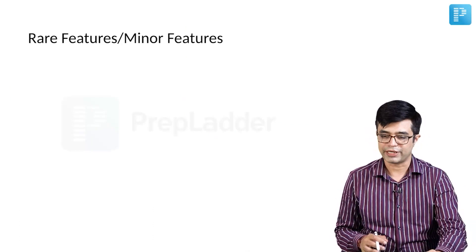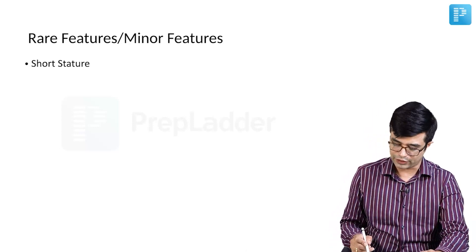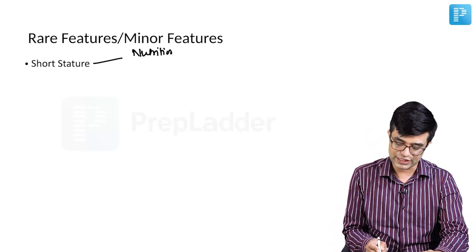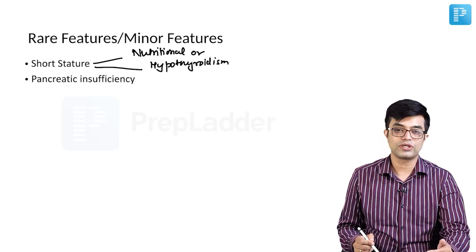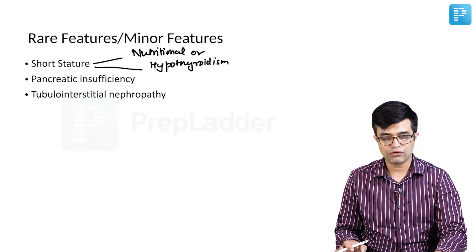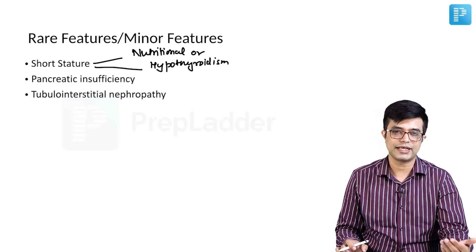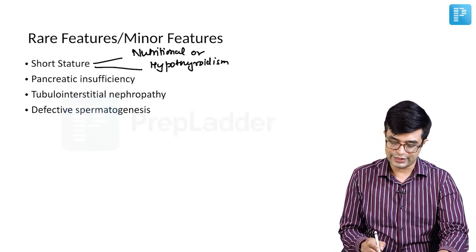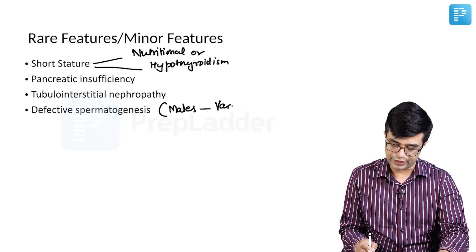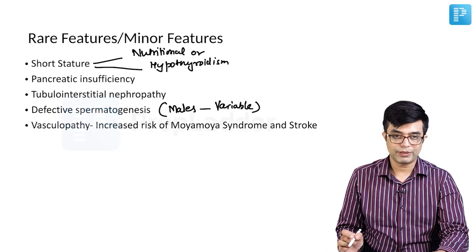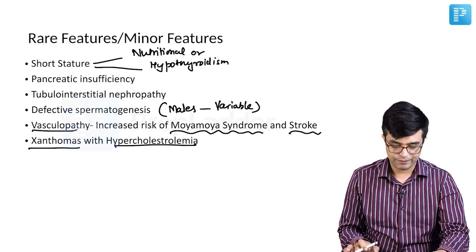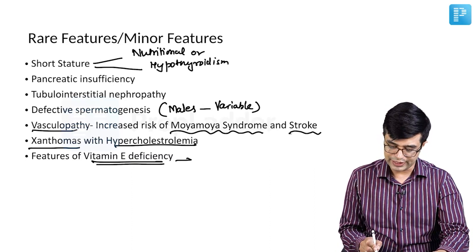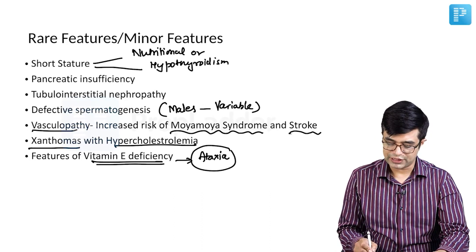There are also rare or previously called minor features, including short stature, which is multifactorial — related to nutritional deficiencies from cholestasis or hypothyroidism. Exocrine pancreatic insufficiency is common. Tubular interstitial nephropathy can lead to renal changes. Defective spermatogenesis may occur in males. Vasculopathy includes increased risk of moyamoya syndrome and stroke. Xanthomas form with hypercholesterolemia, and features of vitamin E deficiency producing ataxia can sometimes be seen.